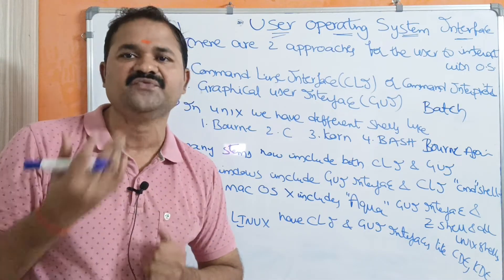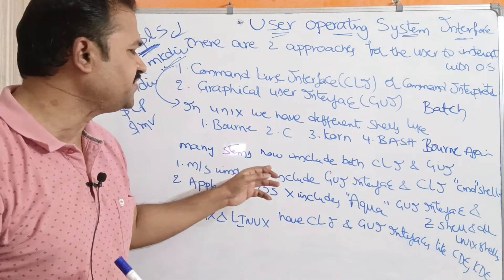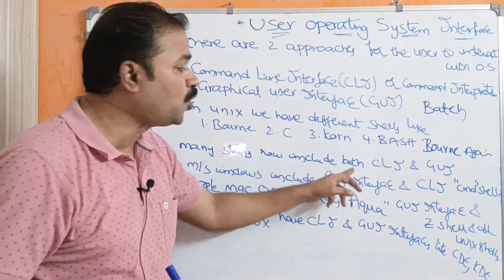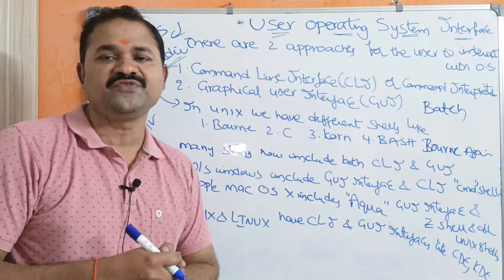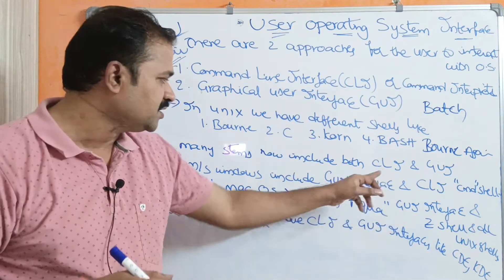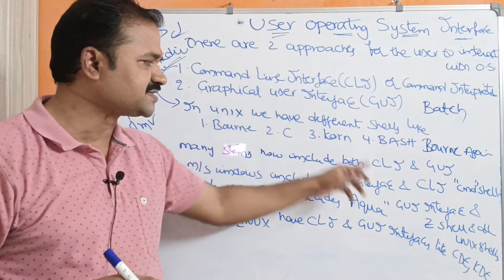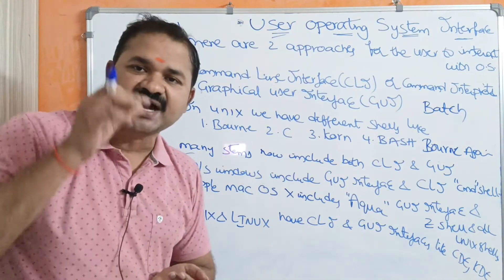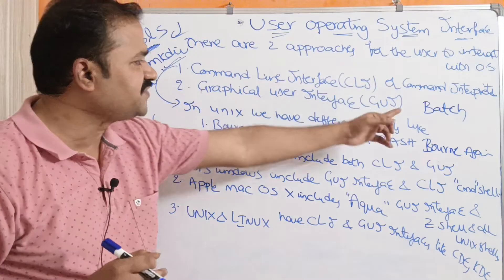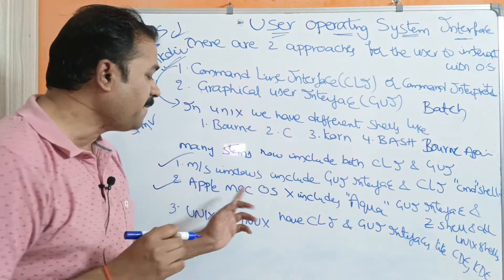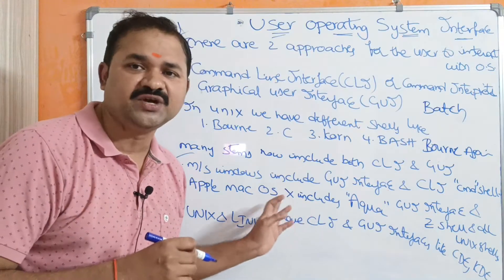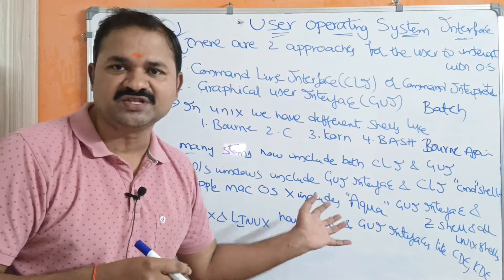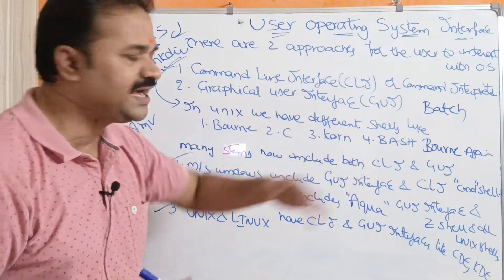The most commonly used GUI is Windows. Importantly, there are many operating systems which include both CLI and GUI. Three such operating systems are: first, Microsoft Windows; second, Apple Mac OS X; and third, Unix and Linux. All three operating systems contain both CLI and GUI interfaces.